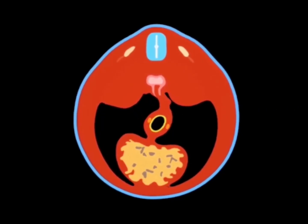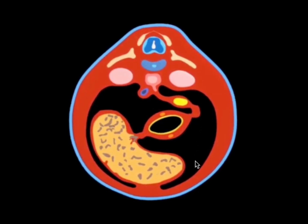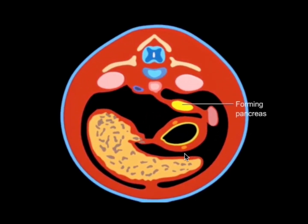During week four, the stomach will twist 90 degrees clockwise from this view, and its dorsal border will grow faster than the ventral border, forming the greater curvature of the stomach. When the stomach moves, other things move with it — like the dorsal mesogastrium, which gets pushed to the left. During rotation of the stomach, the dorsal mesogastrium gets pushed to the left and will form the greater omentum, the mesenteric apron that drapes caudally over the small intestine.